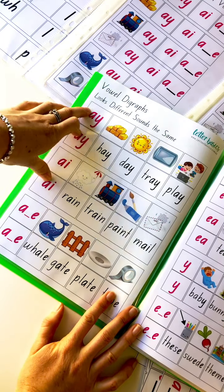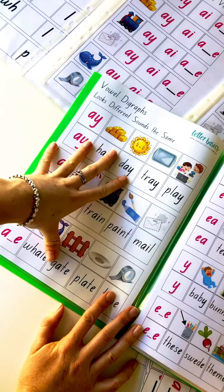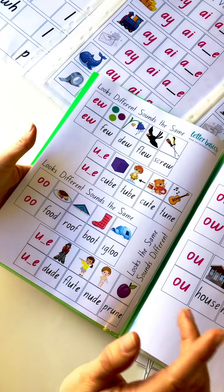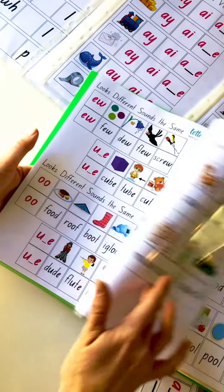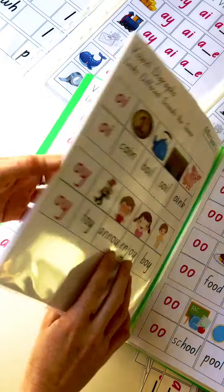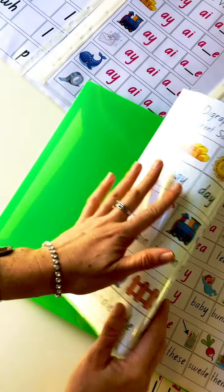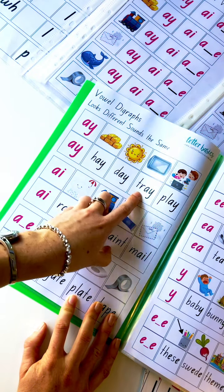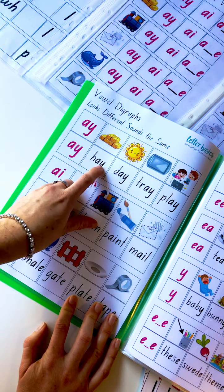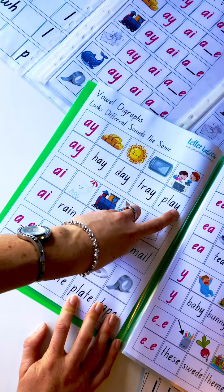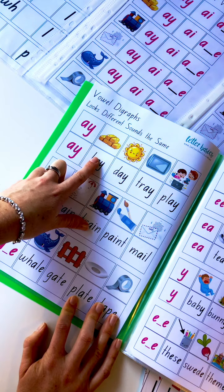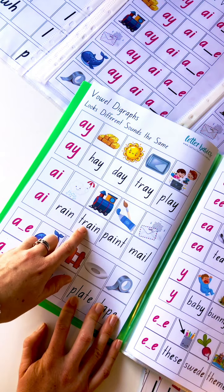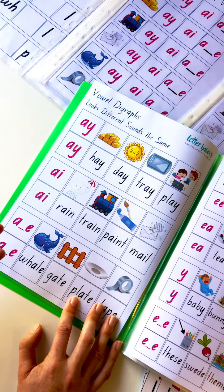We're starting with A. So we've got the AY spelling: hay, day, tray, play, with digraphs as well. These are CV words, CCV, CCV. So AY tends to be at the end of the word. I don't think you'll find one where it's not. We've got AI as in rain, train, paint, mail.